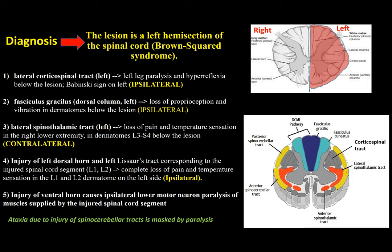Does hemisection include loss of pain and temperature on both sides? Yes, both sides, but the widespread loss is on the opposite side because the spinothalamic tract ascends contralaterally. However, because of dorsal horn injury, there is a limited ipsilateral loss of pain and temperature at the specific dermatome level of the lesion.